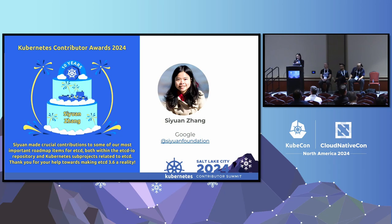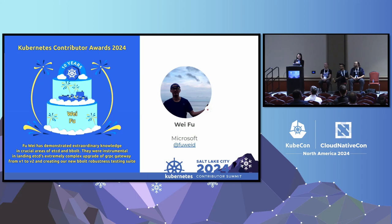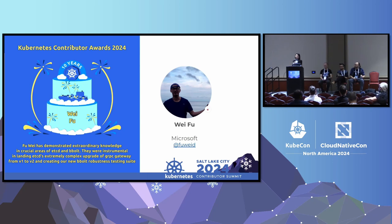The next winner is Siyuan from Google. Siyuan made crucial contributions to some of our most important roadmap items for etcd, both within etcd and Kubernetes sub-projects related to etcd. Thank you, Siyuan, for your help towards making etcd 3.6 a reality. Last but not least, we have Wei Fu from Microsoft, who has demonstrated extraordinary knowledge in etcd and BBolt. They were instrumental in landing etcd's extremely complex upgrade of gRPC gateway from V1 to V2 and creating our new BBolt robustness test suite. Wei was supposed to be one of the speakers but couldn't make the trip — we'll see him next time.